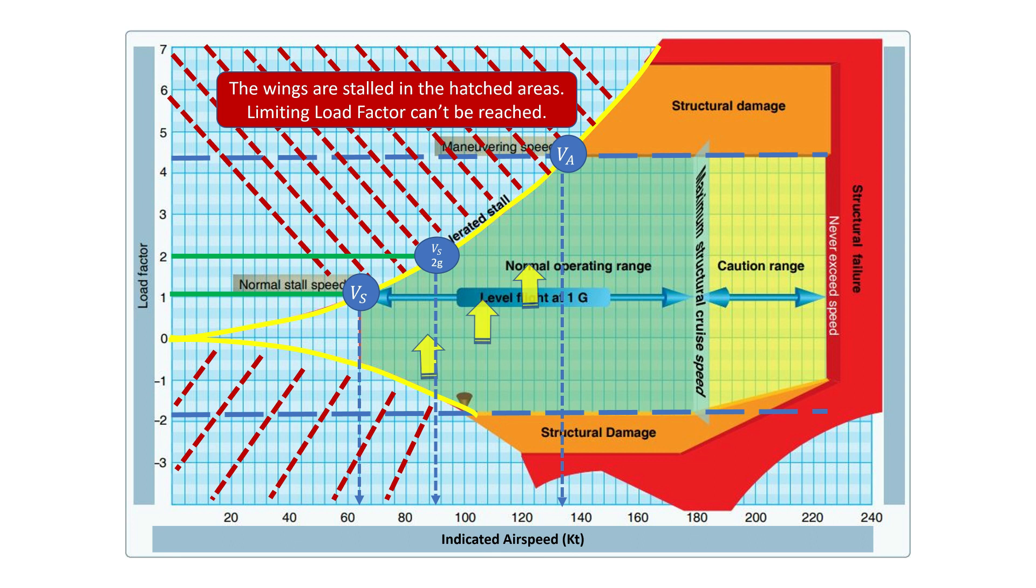When flying below VA, the wing stalls before reaching the limit load factor. Above VA, full deflection of any flight control can result in permanent structural deformation and damage.